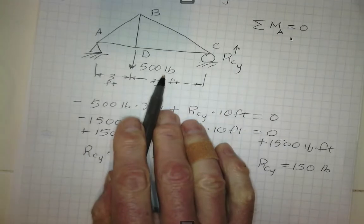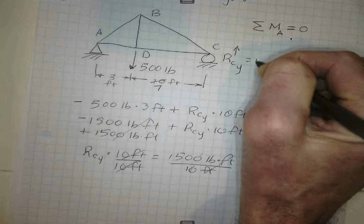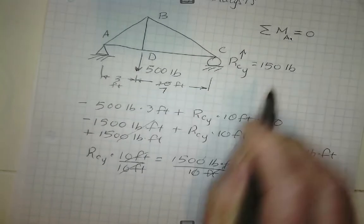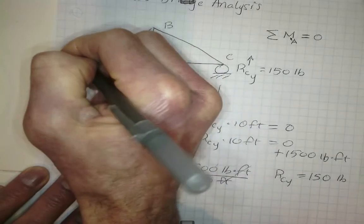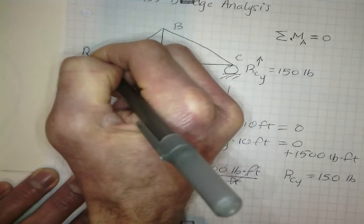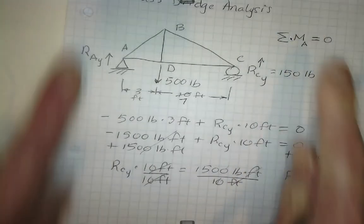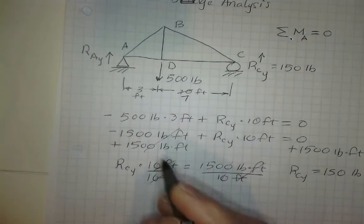Now, if there's 150 pounds pushing up here, these two forces pushing up, we'll call this one R, the reactionary force at A in the y direction. These two forces pushing up must be equal to 500 pounds.